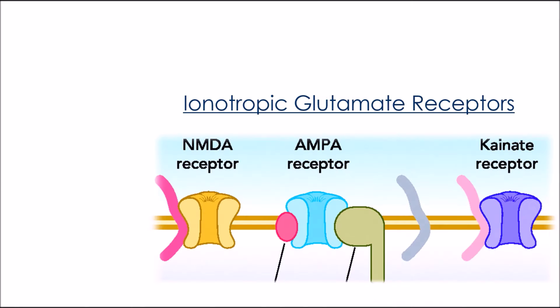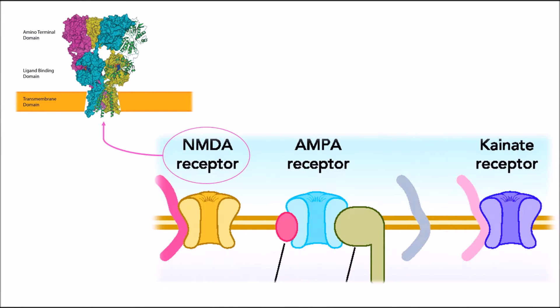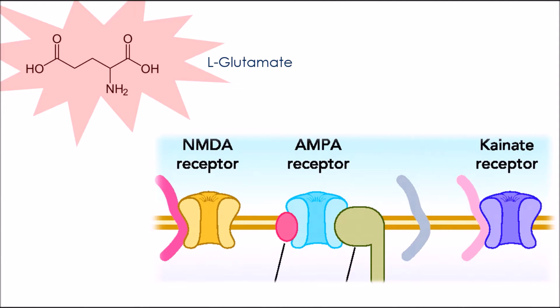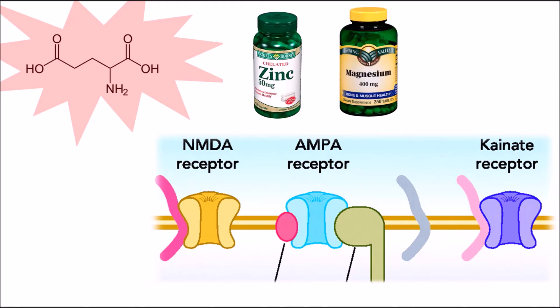NMDA receptors are a type of ionotropic glutamate receptor, a class of ion-channel neuroreceptors whose agonist is the neurotransmitter glutamate. However, NMDA receptors also bind a variety of other ions and small molecules like zinc, magnesium, glycine, and more.